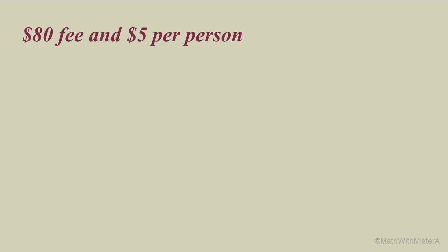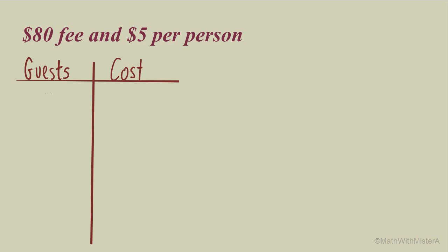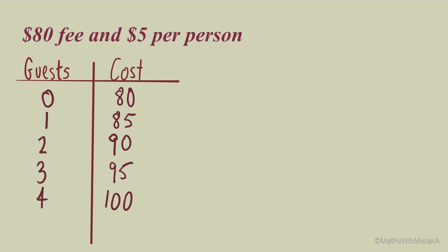We'll first look at the red option: an $80 fee and $5 per person. The $80 fee means that without any guests we still have an $80 cost. The first guest adds another $5 for a total of $85, the second guest brings it to $90, and this pattern continues with each additional guest adding $5. That $5 per person increase is our constant rate of change, giving us a linear model.